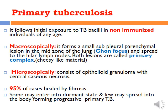In primary tuberculosis, following exposure of a non-immunized person to TB bacilli for the first time, the patient usually develops a lesion in the lungs subpleurally — either in the lower part of the upper lobe or the upper part of the lower lobe, that is, in the mid-zone of the lung. This lesion is called the Ghon focus. From there, the microorganism may spread through lymphatics to the hilar lymph nodes, establishing disease there. The combination of the Ghon focus and hilar lymph node involvement is called the Ghon complex or primary complex. Microscopically, it consists of a granuloma with caseous necrosis.